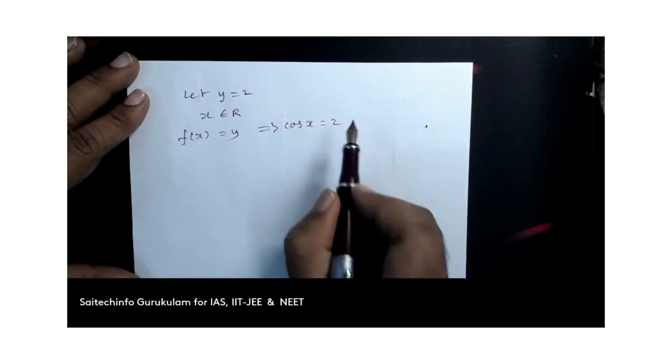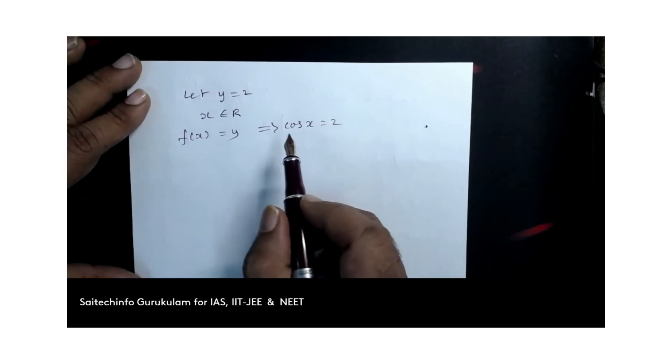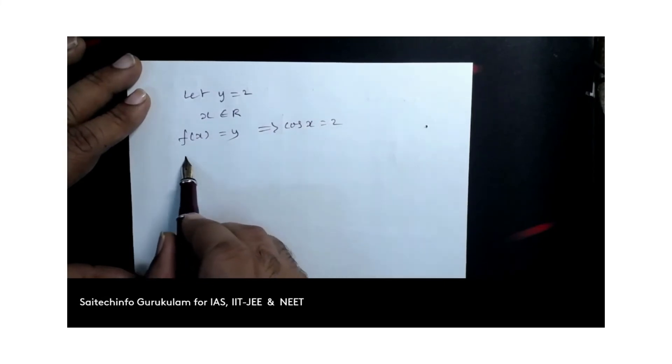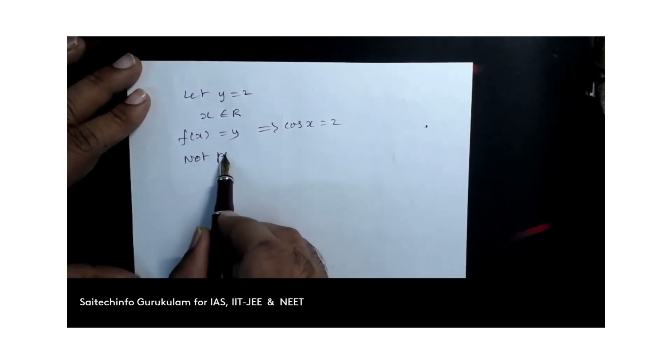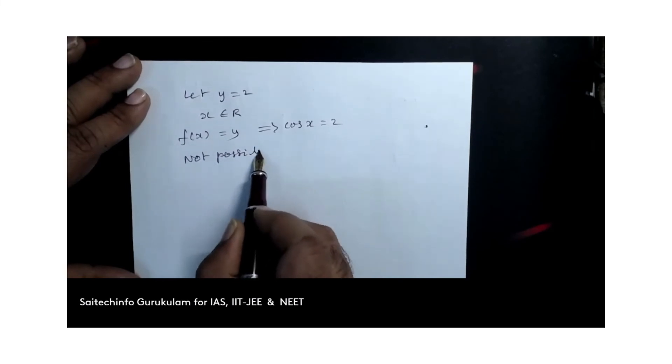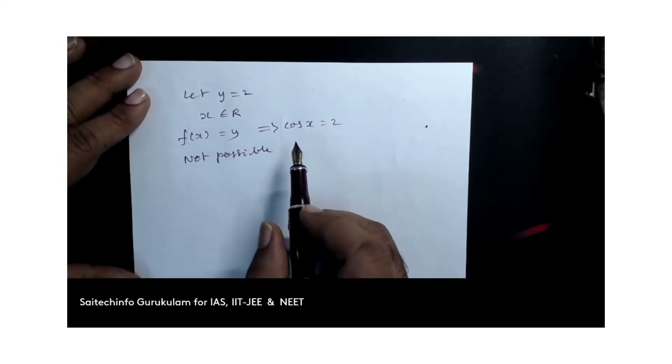But we cannot say cos x equals 2. So not possible. And that's why it is not onto function.